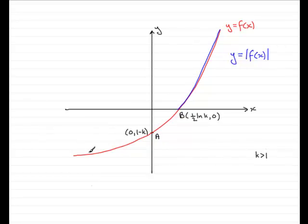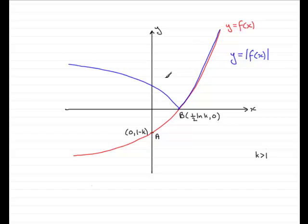If you reflect this part of the curve that's below the x-axis in the x-axis, it's going to look something like this, coming up like so. And we've got to mark on the points where it crosses the y-axis and the x-axis. On the x-axis, that point is going to remain exactly the same, but on the y-axis, this point here is going to get mirrored above.